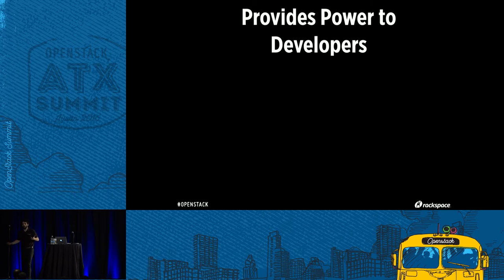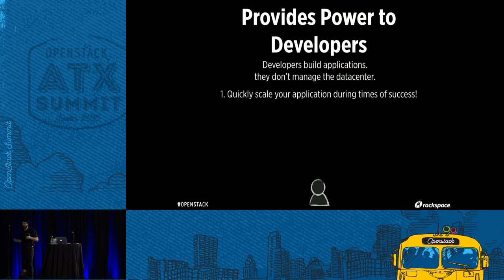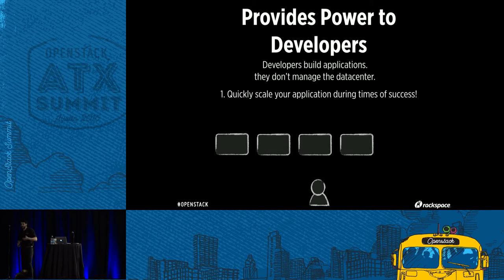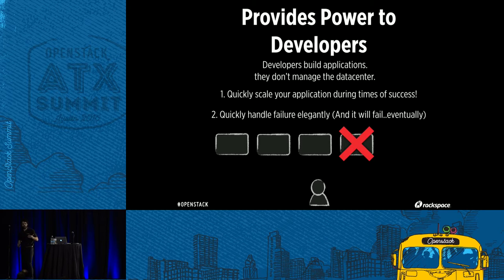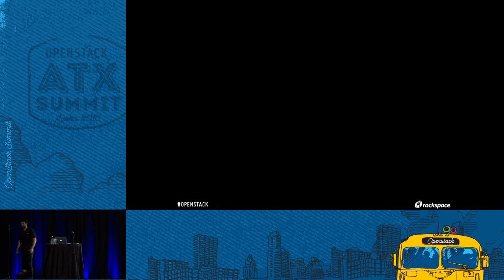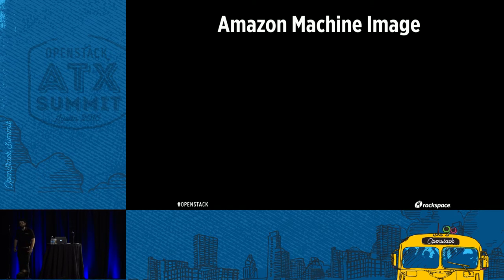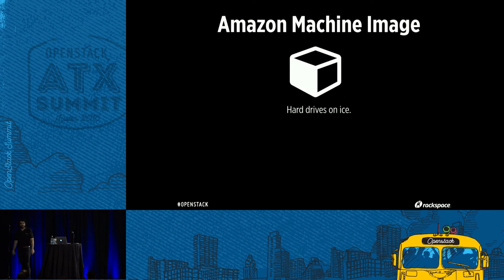This provided power to developers. Developers don't manage the data center, they don't want to worry about hardware. They're going to quickly scale their application during times of success — spin up some instances, and if one fails or the configuration gets messed up, just spin up another one. When you signed up for that beta in August 2006, you were presented with AMIs — Amazon Machine Images — like snapshots or hard drives on ice. No more going through the Fedora, CentOS, or Ubuntu installer.